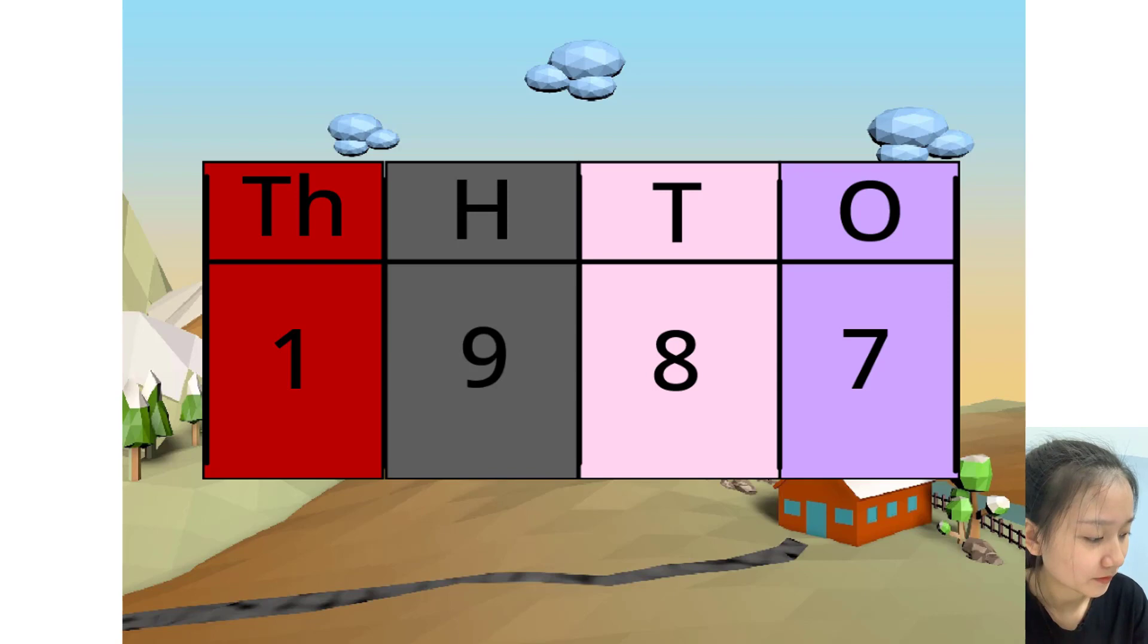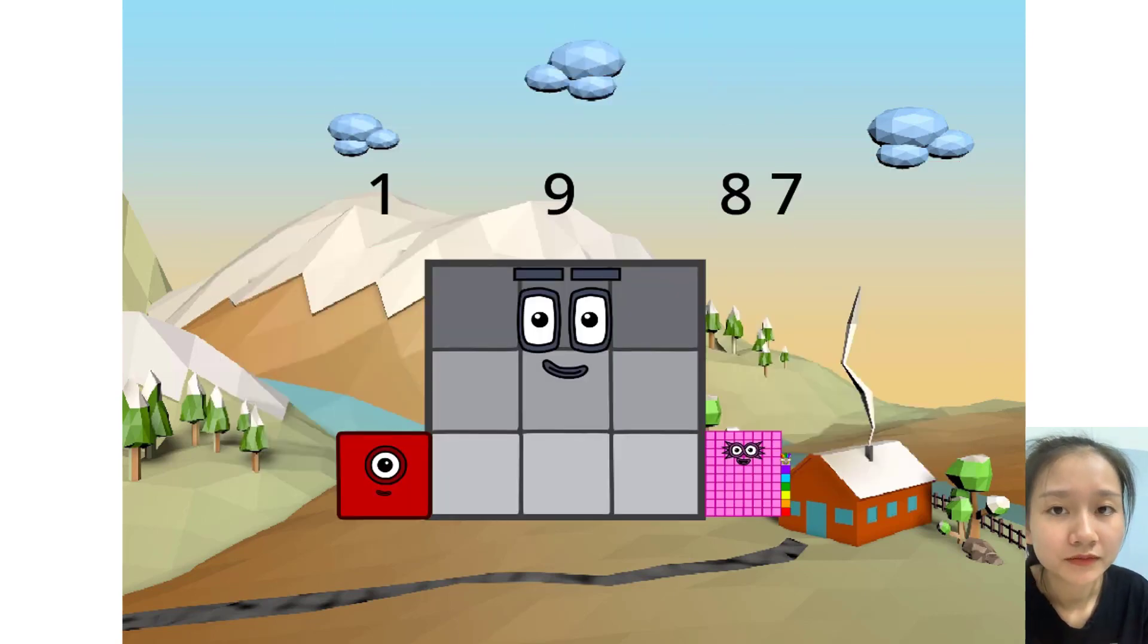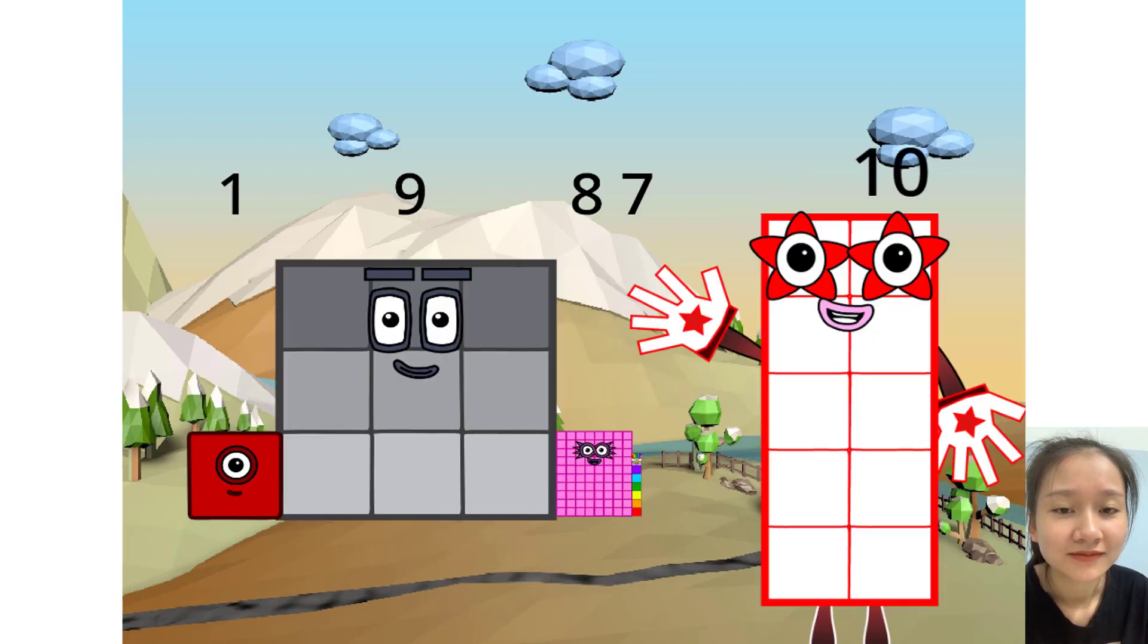See? Let's see this in block form. Shall we? As you can see, this number is 1 nine-hundred, 8 tens, and 7 ones.